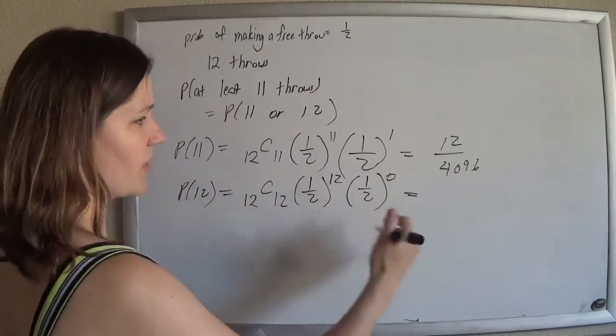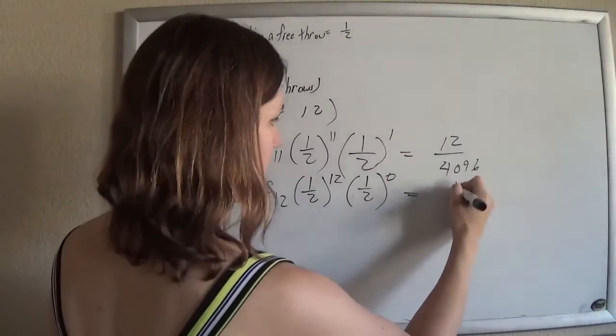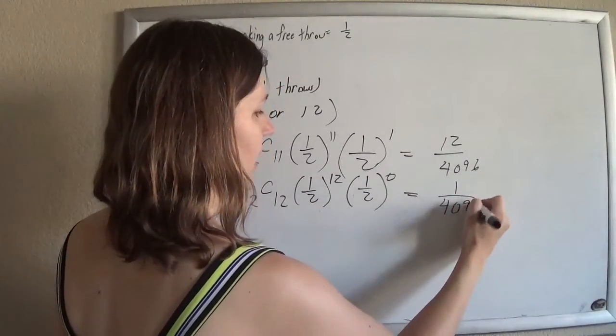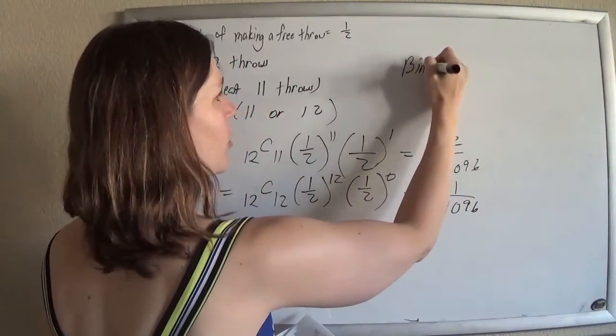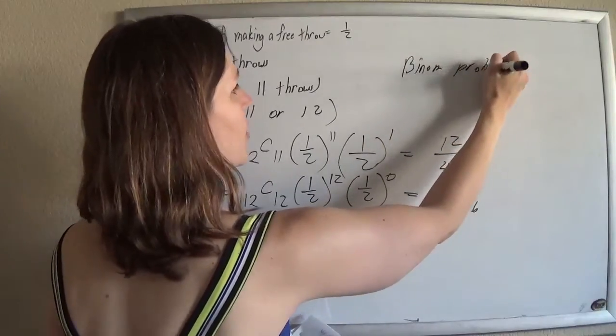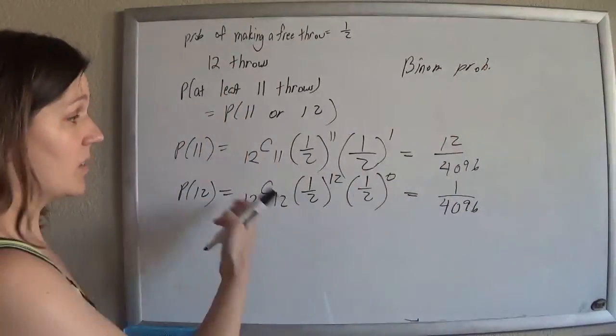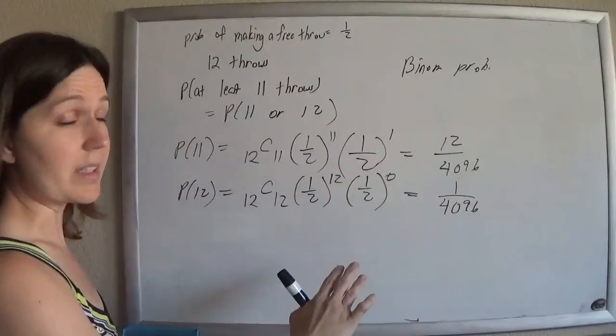So basically this is just a half to the 12th, which is just 1 over 4,096. And again, this is your binomial probability. There's a formula for it, but I don't like it. You just kind of reason it out. It works.